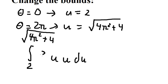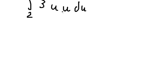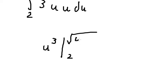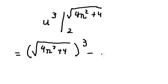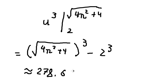We place the factor of 3 in front and integrate 3u², giving us u³ evaluated from 2 to √(4π²+4). This gives us the final answer, which is approximately 278. This is the end — thank you for watching.